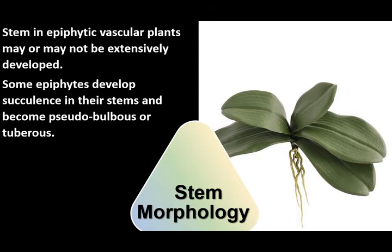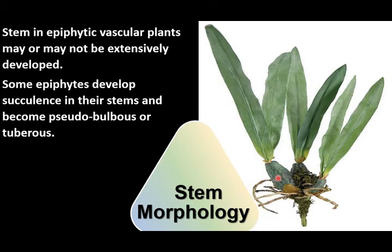The stem in epiphytic vascular plants may or may not be extensively developed. Some epiphytes develop succulency in their stem and become pseudobulbous or tuberous, as you can see here. This is the tuberous stem with roots attached, and so the stem is not extensively developed in epiphytes.